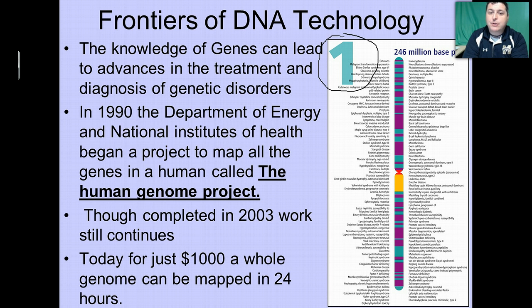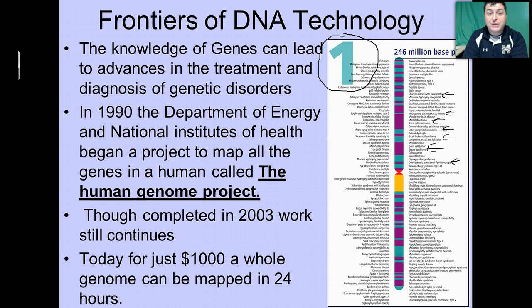Here we have a cartoon diagram of chromosome number one and all of its 246 million base pairs. Labeled here are many of the traits associated with the genes carried by chromosome one. By identifying which chromosomes are associated with which traits and which genetic disorders, scientists can focus their efforts on those particular chromosomes and hopefully discover preventative measures and cures in the near future.